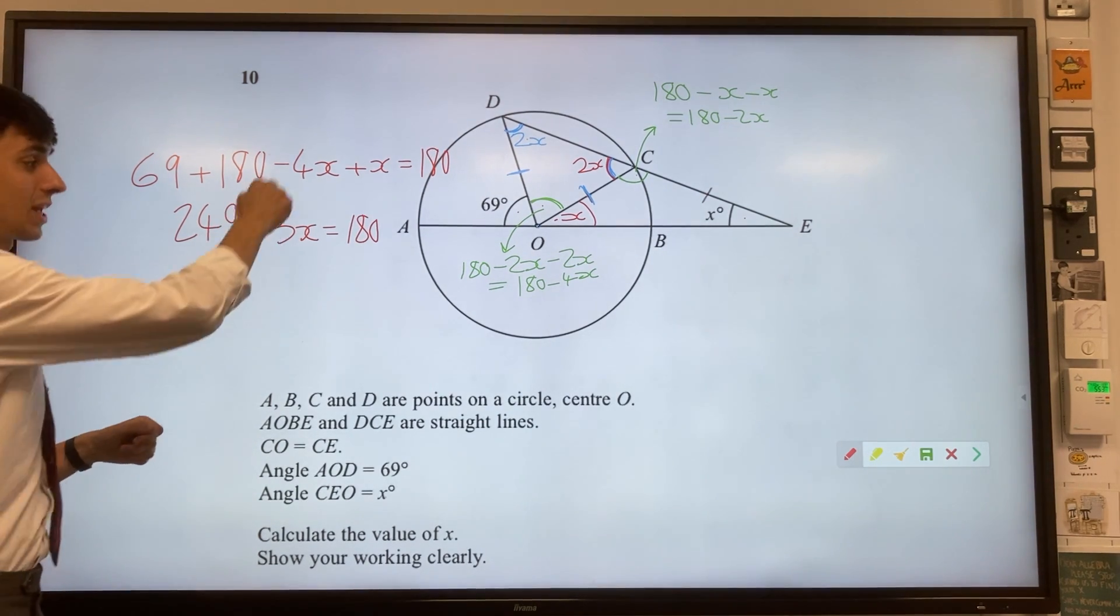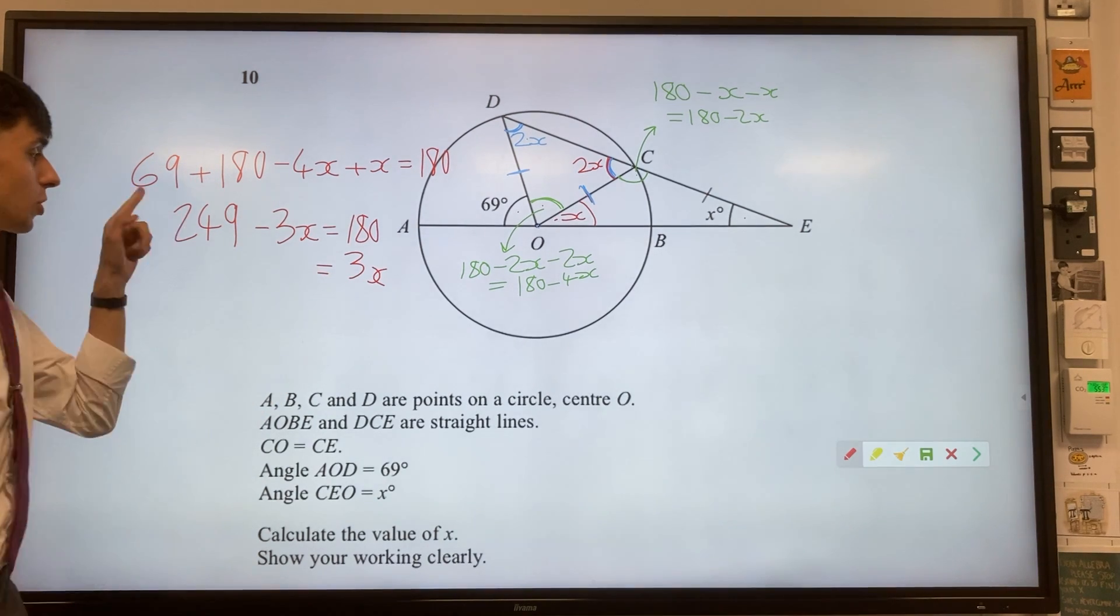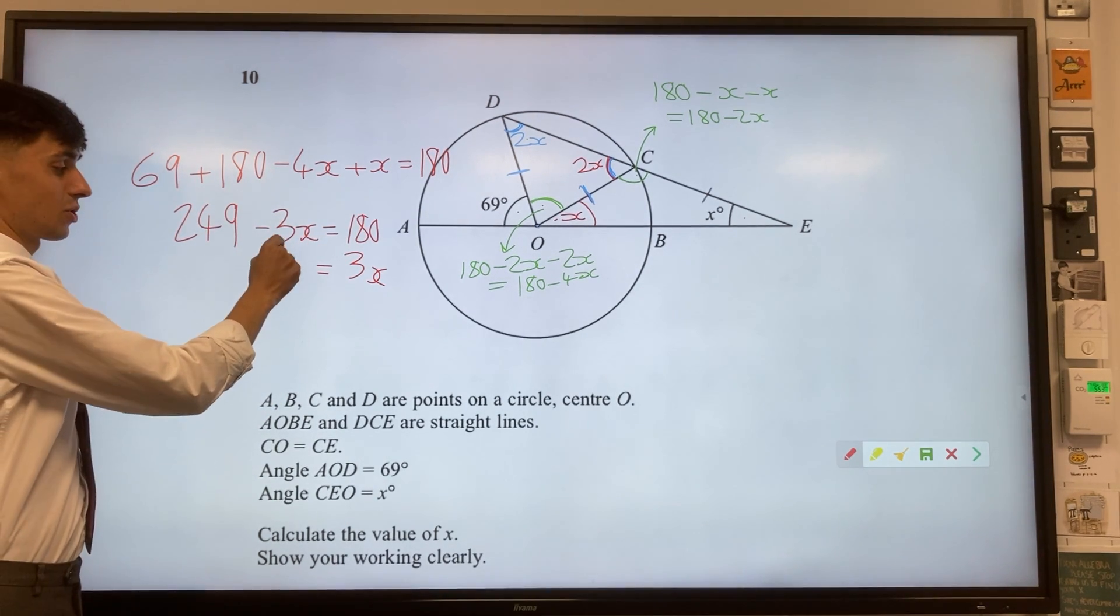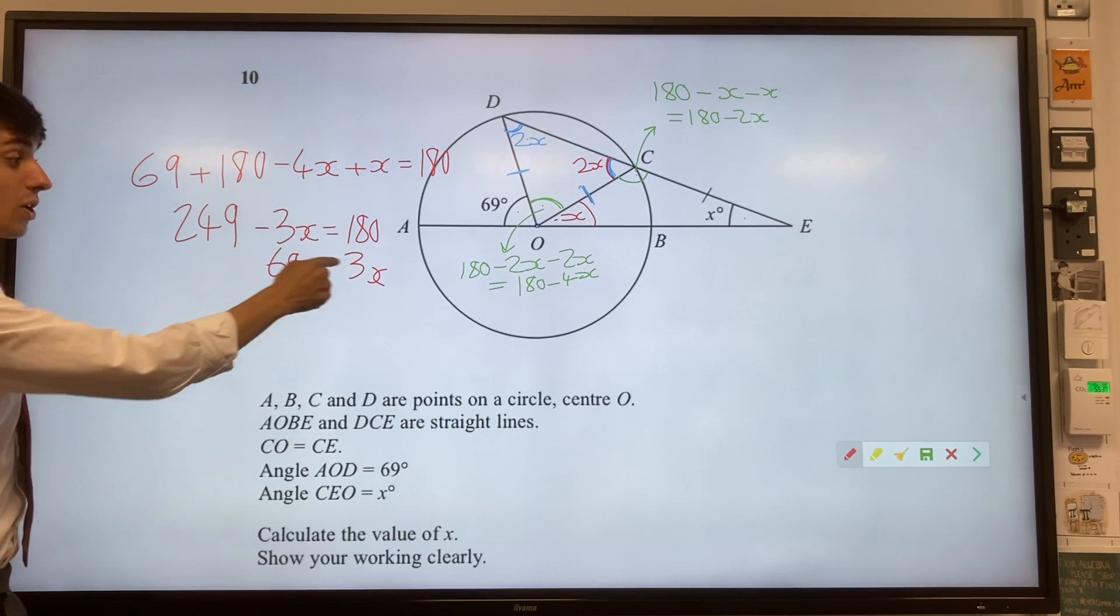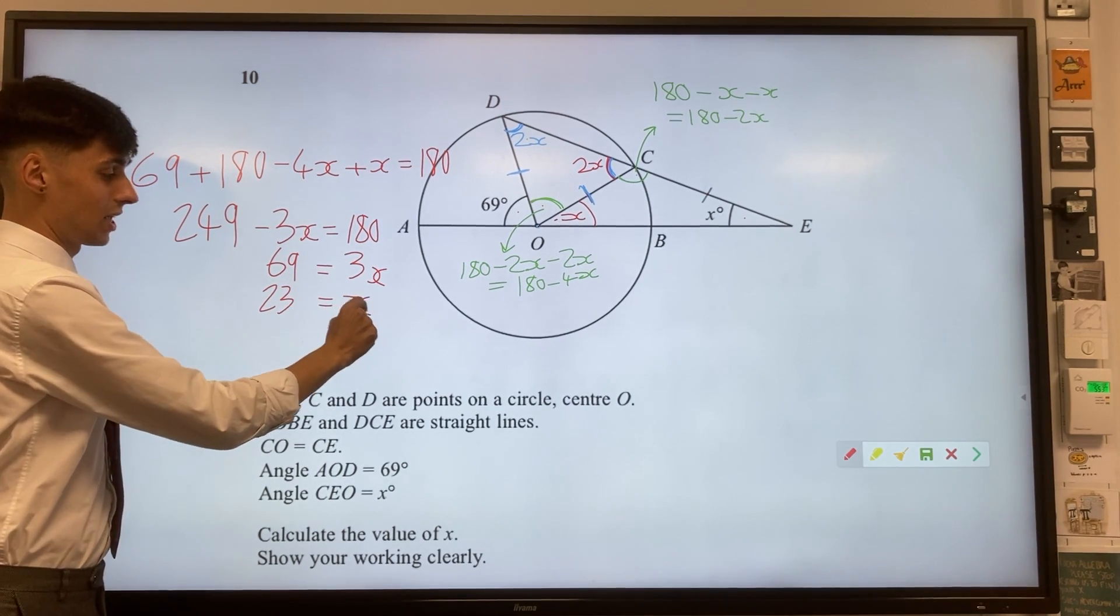Sorting this out then, we want to take 3x over to this side, and 249 take away 180 should give you 69. Dividing both sides by 3 should get you x equals 23.